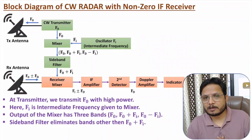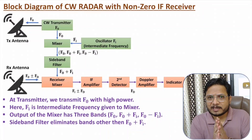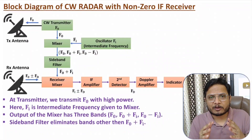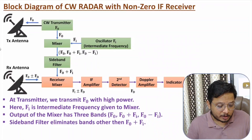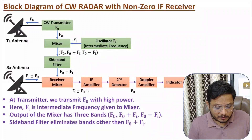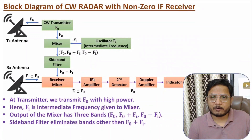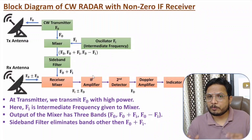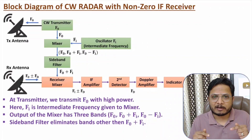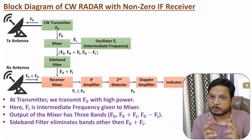I hope you have understood this. The basic agenda of this non-zero IF receiver is to achieve lower flicker noise as well as better isolation. Two separate antennas provide better isolation, and with the use of the IF amplifier, we have reduction in flicker noise with this radar system. If you have anything you'd like to share, please note it down in the comment section — I will be happy to help you. Thank you so much for watching this video.